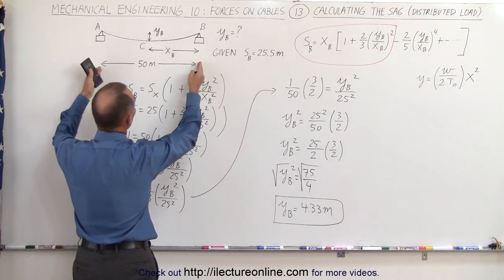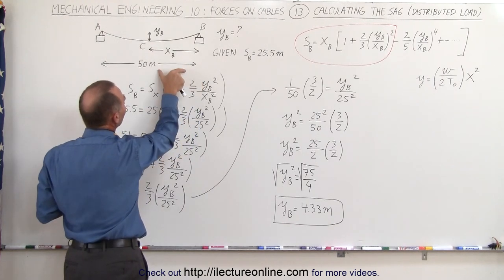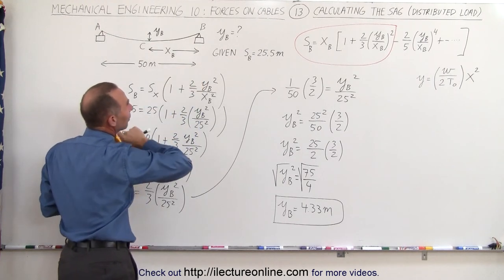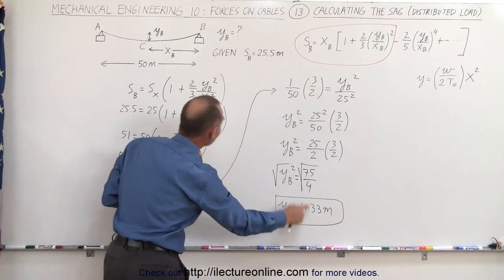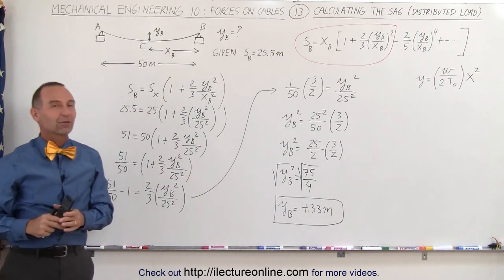That means that if the length of the cable is 25 and a half meters, at least for half the cable, or 51 meters for the whole length of that section, and half of it is 25 meters, then we can find that the sag would be 4.33 meters. And that's how it's done.